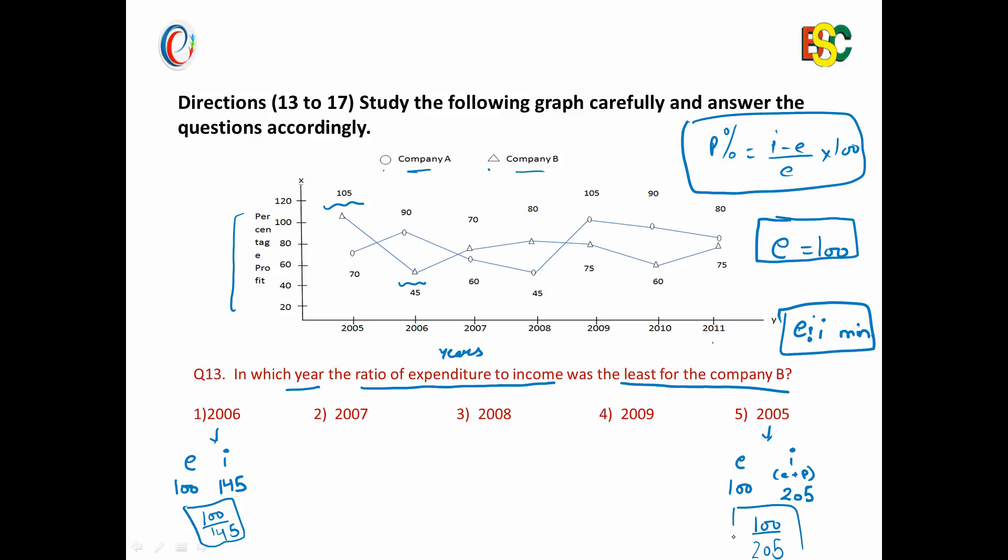But from these two calculations we have got one thing: our answer would be least or minimum when the denominator would be higher. So denominator is income everywhere, and income is higher when profit is higher, as all the expenditure is 100. So we will just find out where the profit is higher, or in which year the profit percentage value is higher for company B. And for this we can see that it is 105 in year 2005 only, which is maximum for company B, and thus our answer is 2005.